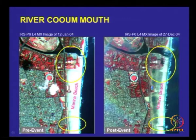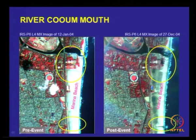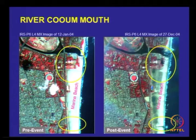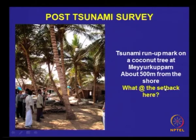One of the rivers draining into the Bay of Bengal runs through the city of Chennai, and the closure of the river mouth has been a perennial problem for decades — it acts as a stagnant pool of water for the breeding of mosquitoes and other associated problems. During the tsunami it was opened, and even the Adayar river was opened. We did the tsunami run-up survey — for example, we identified marks on a coconut tree about 500 meters from the shore.